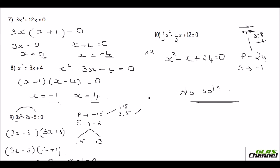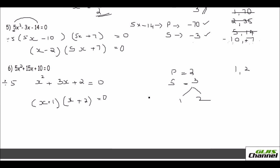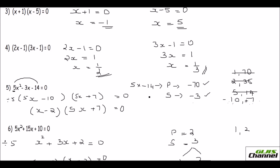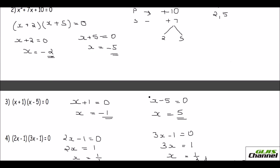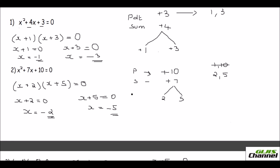I hope you now have a clear picture of how to do factorization. It's actually very simple — all you need to do is find two numbers such that when you multiply them you get the product value, and when you add or subtract them you get the middle term. Hope this video was helpful to you. Thank you, bye.